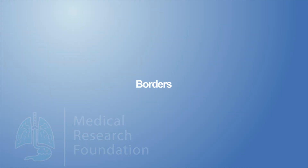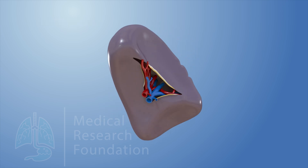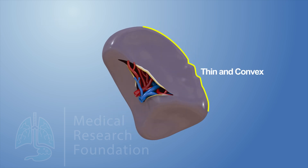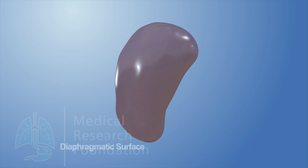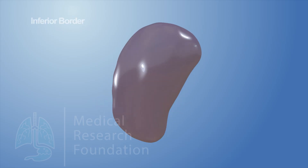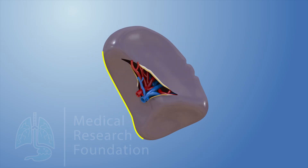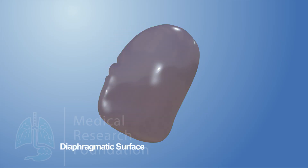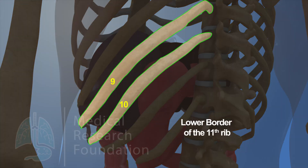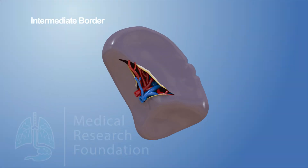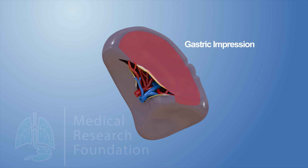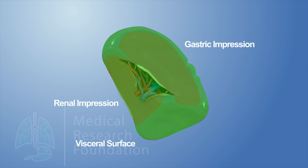The superior border is thin and convex, and separates the visceral surface (gastric impression) from the diaphragmatic surface. The inferior border separates the visceral surface from the diaphragmatic surface and corresponds to the lower border of the 11th rib. The intermediate border is rounded and separates the gastric impression from the renal impression on the visceral surface.